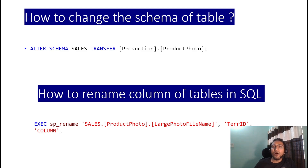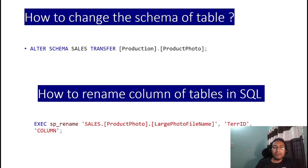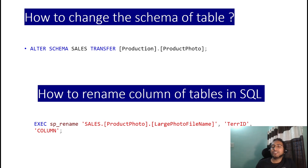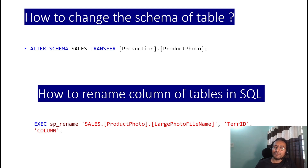Sixth question: how do you change the schema of a table in SQL? This can be a tricky one. The statement is: ALTER SCHEMA [new_schema] TRANSFER [old_schema].[table_name]. For example, to transfer the table 'ProductionPhoto' from the 'Production' schema to the 'Sales' schema: ALTER SCHEMA Sales TRANSFER Production.ProductionPhoto. Once you run this statement, the table moves to the Sales schema.